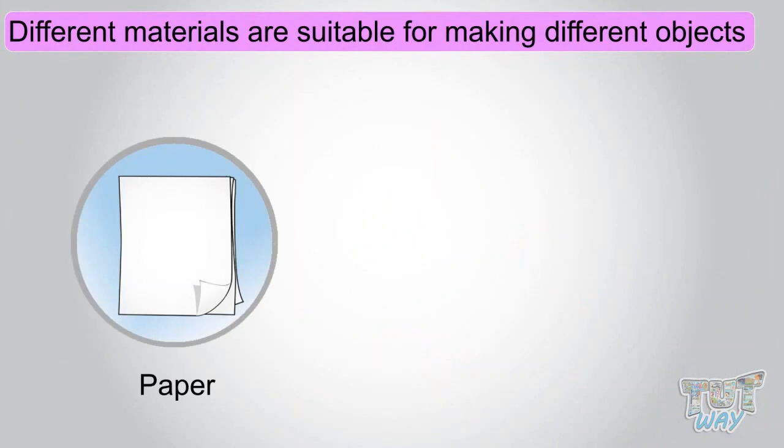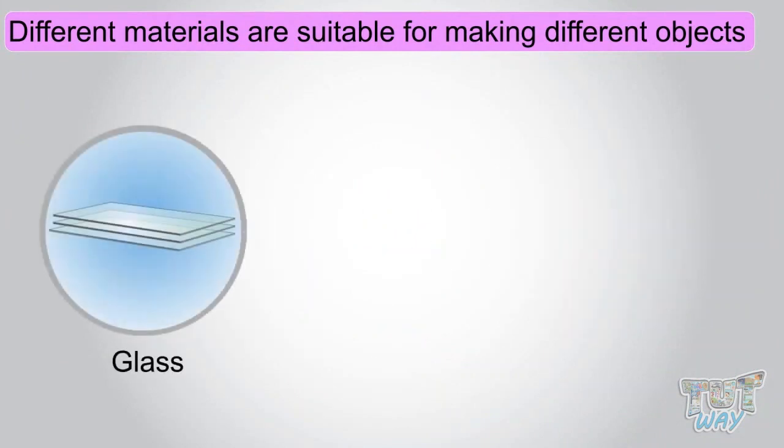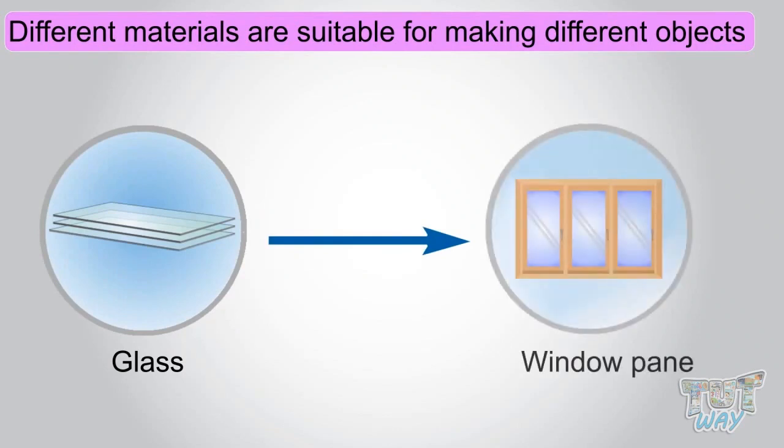Different materials are suitable for making different objects. Like paper is suitable for making notebooks to write. Glass is suitable for making window panes.